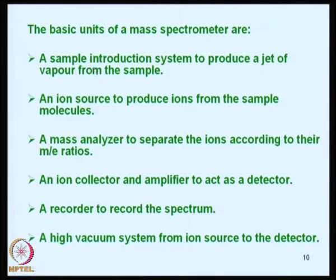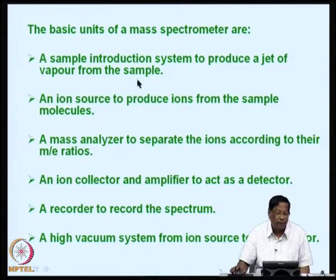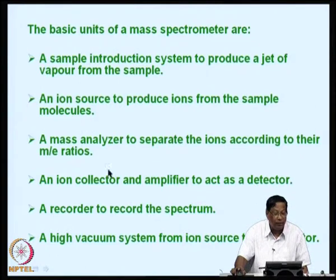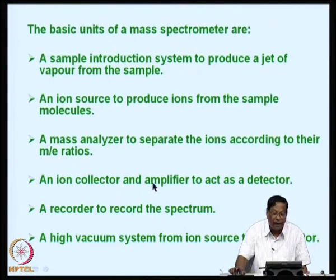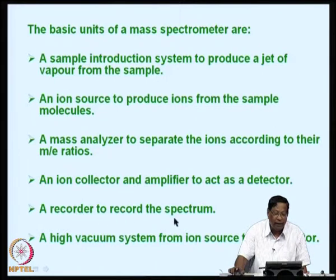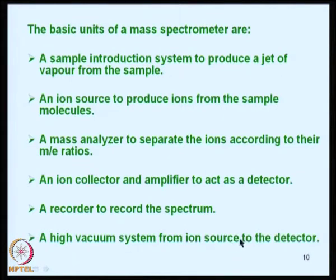The basic units of a mass spectrometer are: a sample introduction system, in which a small amount of sample is introduced as a jet of vapor or liquid; an ion source to produce ions from the sample molecules; a mass analyzer to separate the ions according to their m/z ratios; an ion collector and amplifier as detector; an automatic recorder; and a high vacuum system from ion source to detector, which is an essential component.